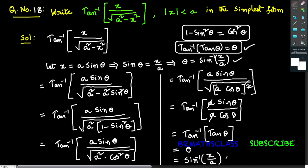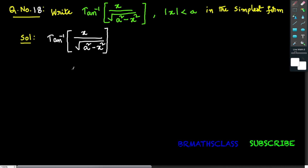Write tan inverse of x divided by square root of a square minus x square in the simplest form. To write the given expression in the simplest form, observe the expression inside the brackets. I want to write this expression in the form of tan theta so that at the end I can use the formula tan inverse of tan theta.